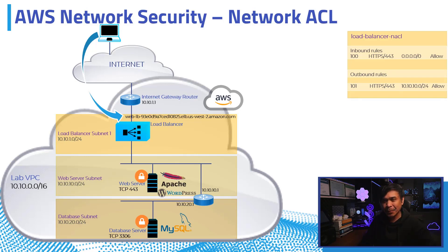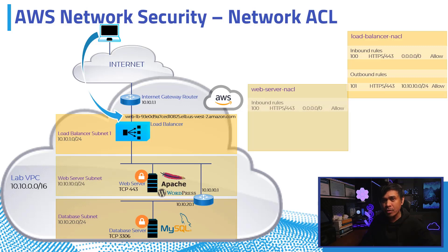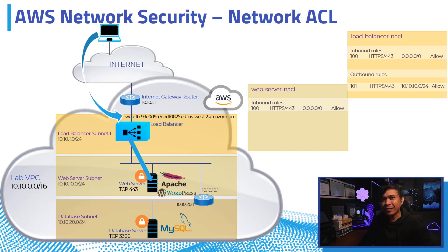On the second NACL, the Web Server NACL, attached to the Web Server Subnet, we added inbound rule number 100 to allow HTTPS TCP 443 traffic from the internet to accept the traffic forwarded by the load balancer. We also added outbound rule number 101 to connect to MySQL application listening on TCP 3306 to our database server.